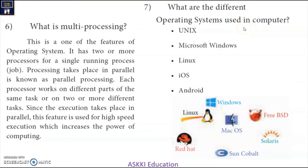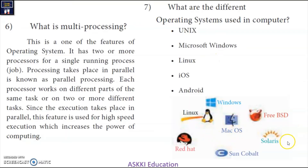What are the different operating systems used in computers? For computers, we use Unix, Microsoft Windows, and Linux. iOS and Android are mobile operating systems; Android OS has recently also been used on computers. Other OS distributions include Macintosh, Redhat, Solaris, and Sun Cobalt. iOS is used on iPad and Apple mobile devices, and Android is used on mobile and computer platforms.